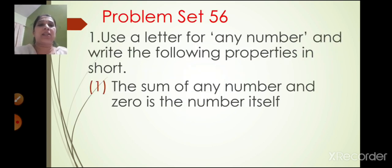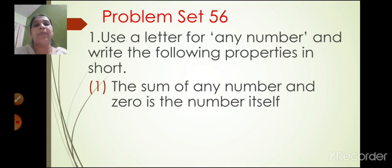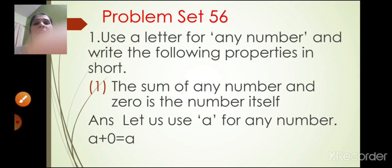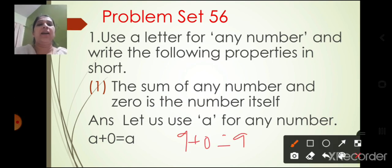Now we will start problems at exercise 56: use a letter for any number and write the following properties in short. The first statement: the sum of any number and 0 is the number itself. Sum means addition. Let us use A for any number. So A plus 0 is equal to A. For example, 9 plus 0 is equal to 9.